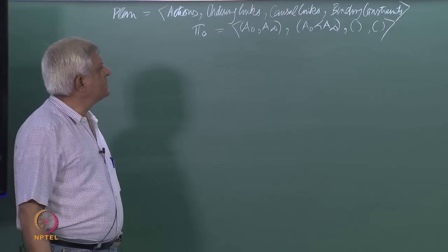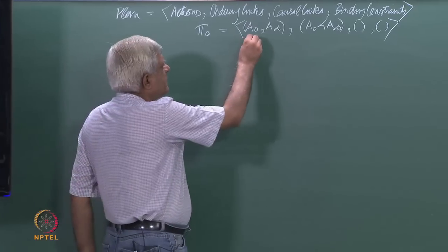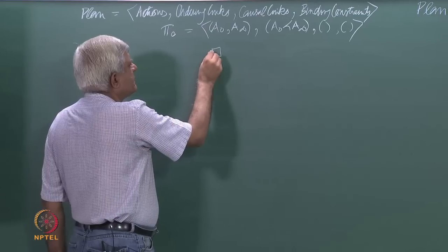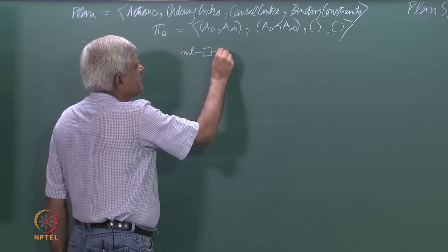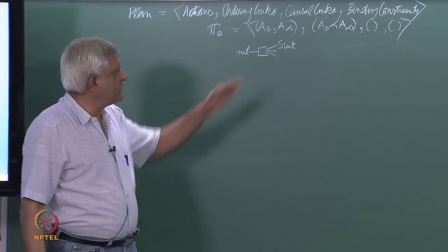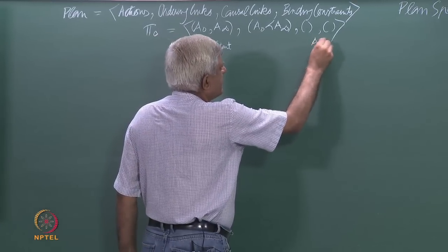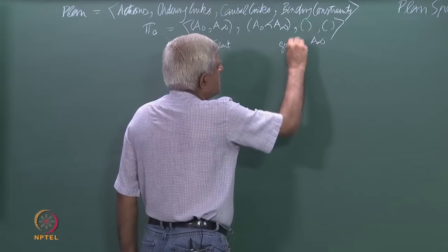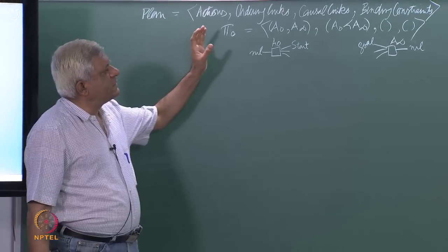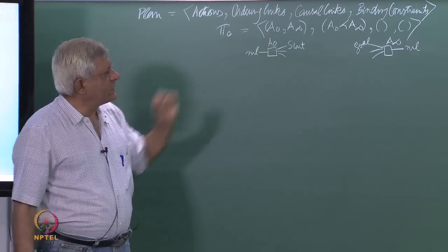This is always the starting position for search in plan space planning. a₀ is an action whose preconditions are nil and postconditions are the start state — everything in the start state is an effect of a₀. And a∞ is an action which consumes the goal predicates and has no effect. The starting node in the search space is this pair of two actions and the ordering constraint between them.